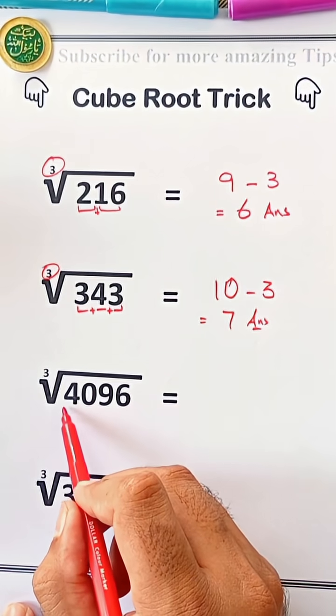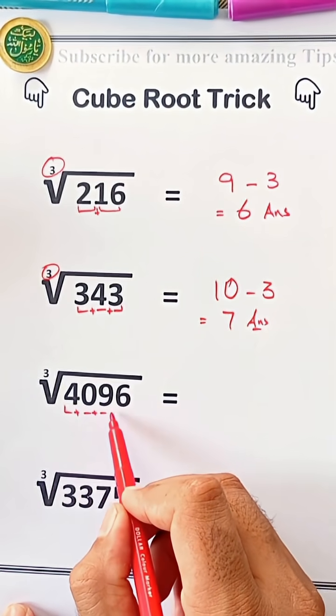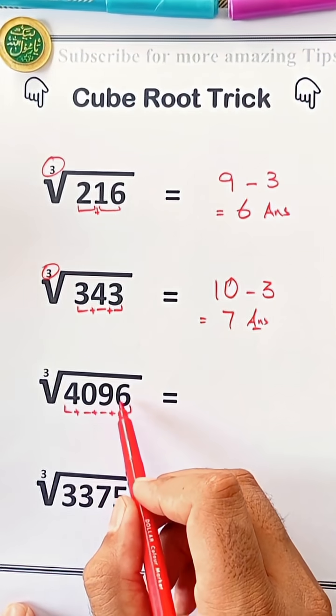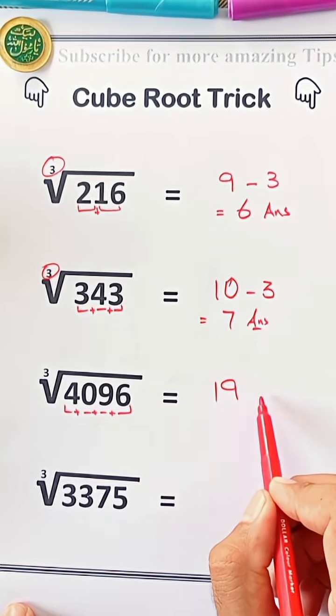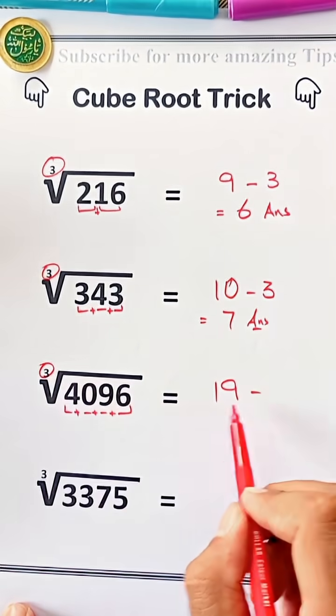In this case, 4096. Add them up. 4 plus 0 plus 9 plus 6 equals 19. Now subtract 3 from 19, which gives us 16.